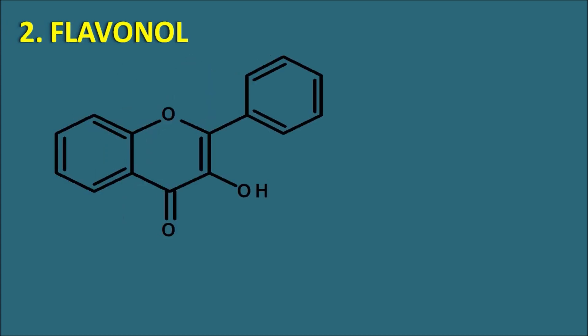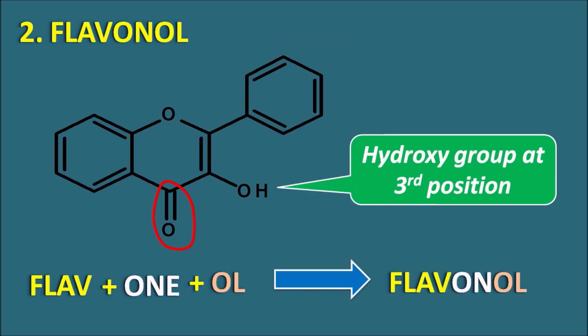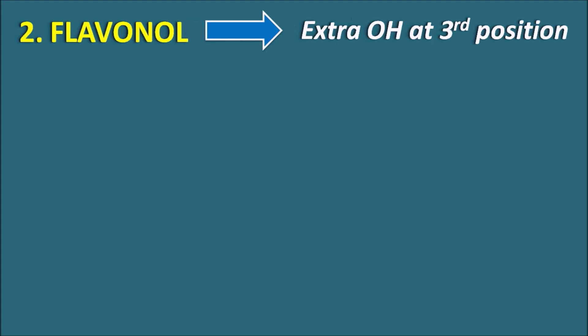The second type is flavonols. Flavonols still have the ketone group at the fourth position, but what is the difference? They also have a hydroxyl group at the third position. The name is derived as flav + 'on' (for ketone) + 'ol' (for OH at third position), giving flavonol. Flavonols have a ketone at the fourth position and an extra OH group at the third position.